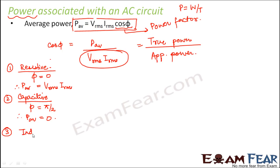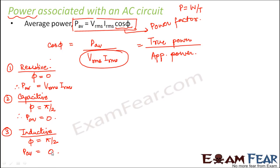In a similar way, for an inductive circuit, the phase difference is also equal to π/2. The only difference is that in an inductive circuit, voltage leads current by π/2. But here also the average power is equal to 0.